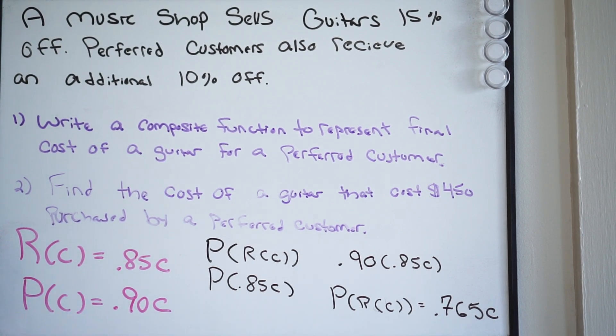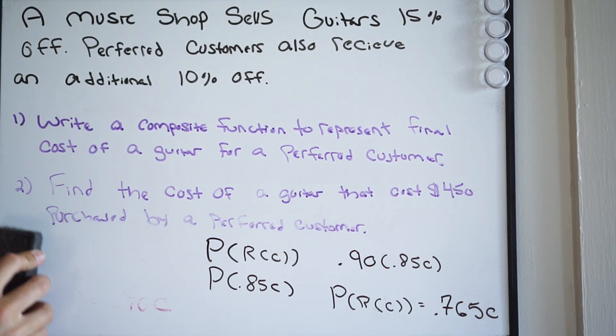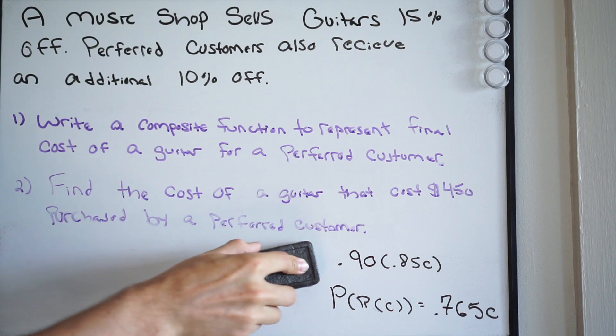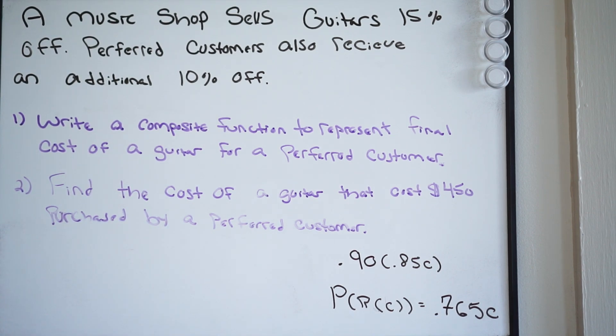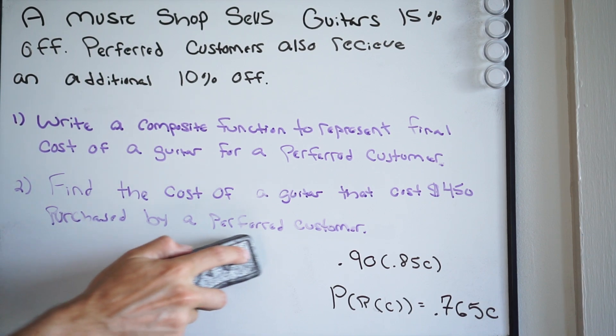Go ahead and erase some of this work here. So there is our composite function that represents the final cost of a preferred customer.